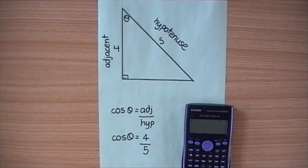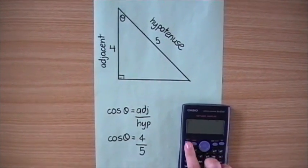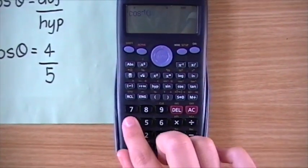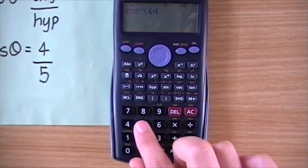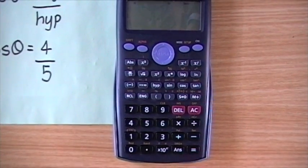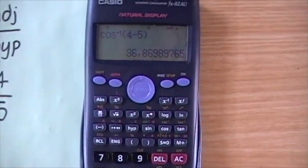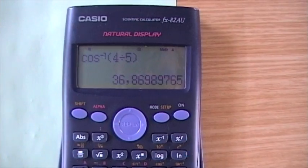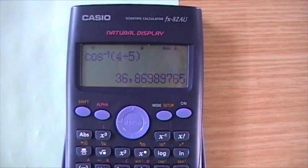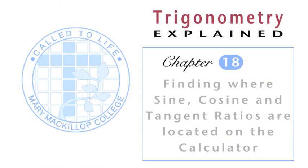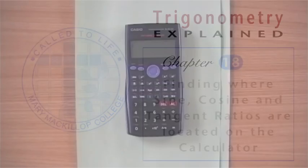When the angle is unknown, we press shift and then cosine. Then press 4 divided by 5 and close the bracket. Press the equal sign, and you will get the answer 36.869765.